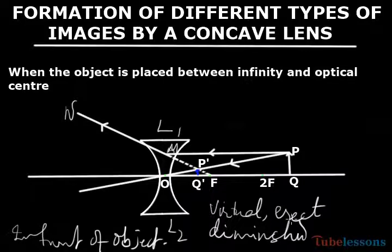So keep in mind that always image formed by a concave lens will be virtual, erect, and diminished, whatever may be the position of the object. Now the formation of image by lens is completed. Now we will go through the formation of image by mirror.